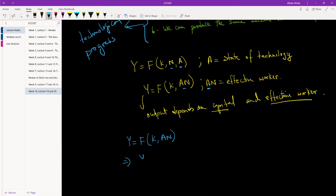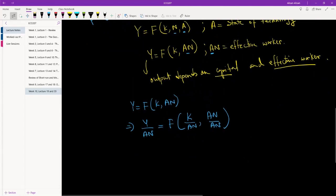So y divided by An equals to function of k divided by An and of course An divided by An. Once we've simplified this what we are going to get is y is a function of k.